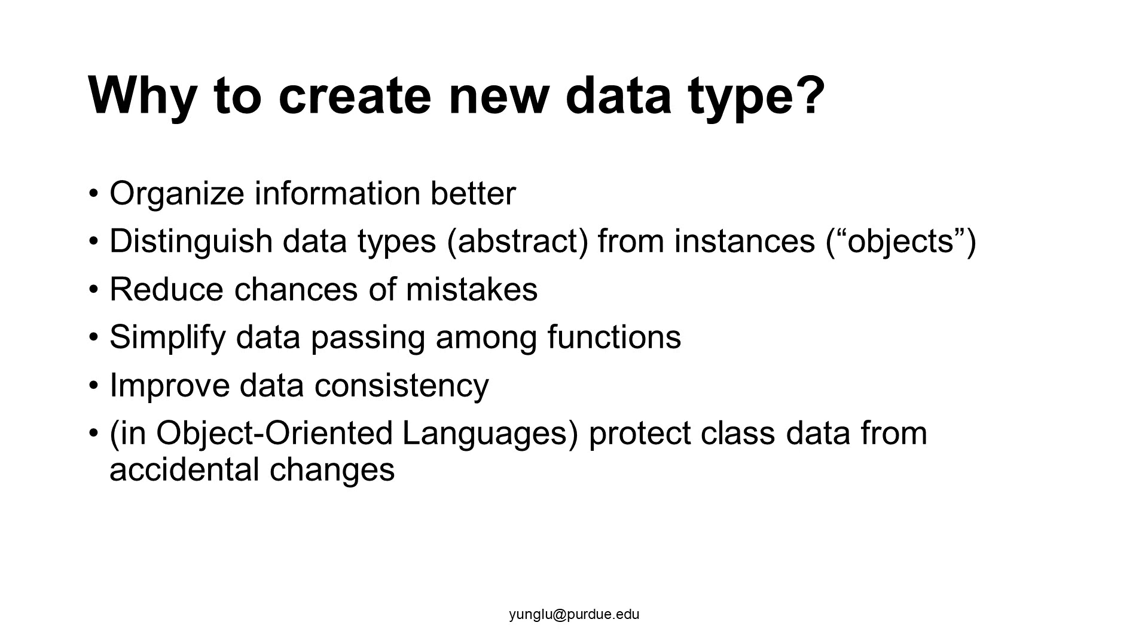By creating new data types and organizing relevant information together, it is easier to write complex programs without mistakes. Imagine that we cannot create a data type called car. Then, we have to remember to keep track of the information about cars, such as sizes of engines and sizes of fuel tanks. Without a structure, it is very easy to forget putting these attributes together and programs will have mistakes.